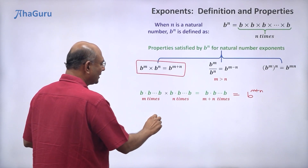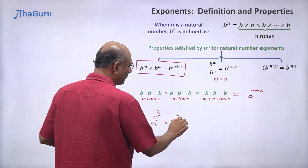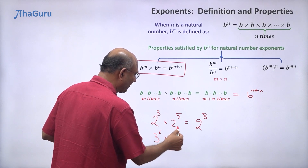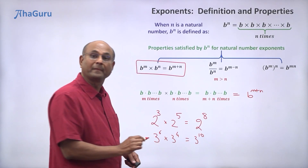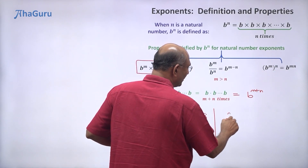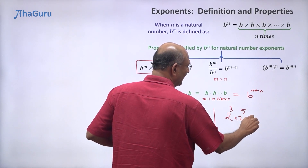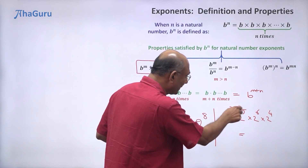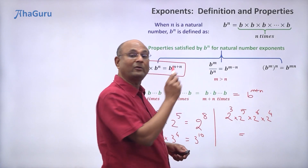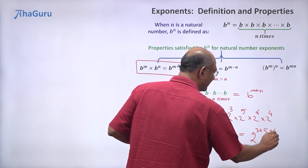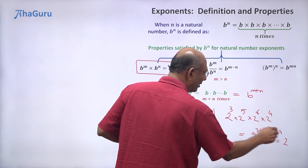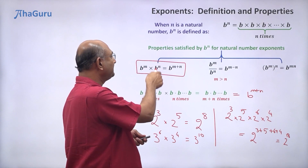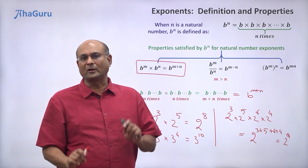For example, 2 to the power of 3 into 2 to the power of 5 is 2 to the power of 8. Similarly, 3 to the power of 6 into 3 to the power of 4 is 3 to the power of 10. You can extend this to many more terms: 2 to the power of 3 into 2 to the power of 5 into 2 to the power of 6 into 2 to the power of 4 gives 2 to the power of 3 plus 5 plus 6 plus 4, which is 2 to the power of 18. In general, b power m into b power n into b power p into b power q equals b power m plus n plus p plus q. This is a very useful rule.